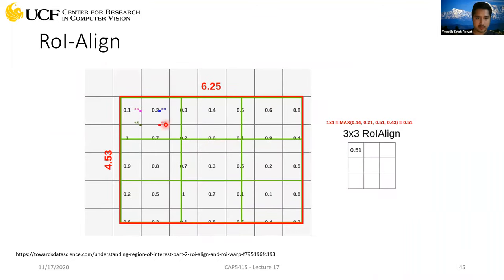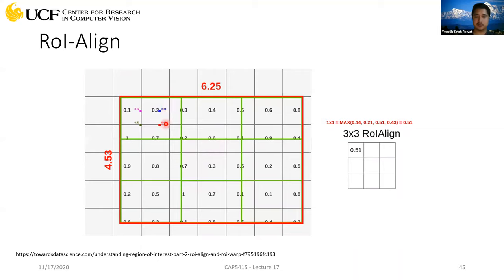Similarly, you get four different values for this region. Then depending on the operation — in this case, max pooling — the maximum value of 0.51 becomes the output for this region. You perform the same operations for all other blocks. In this case, you are not losing any information by performing max pooling because you don't need to quantize coordinates — you estimate values using interpolation. That is ROI Align.